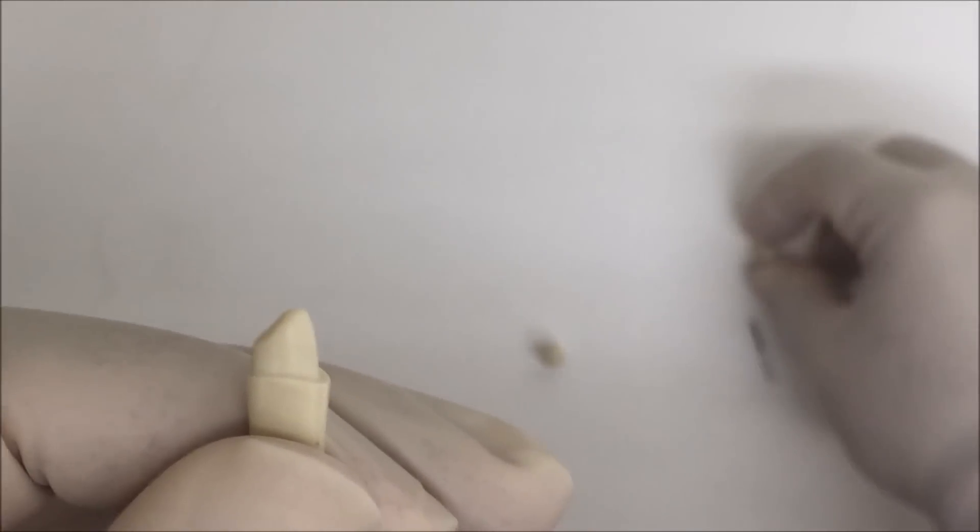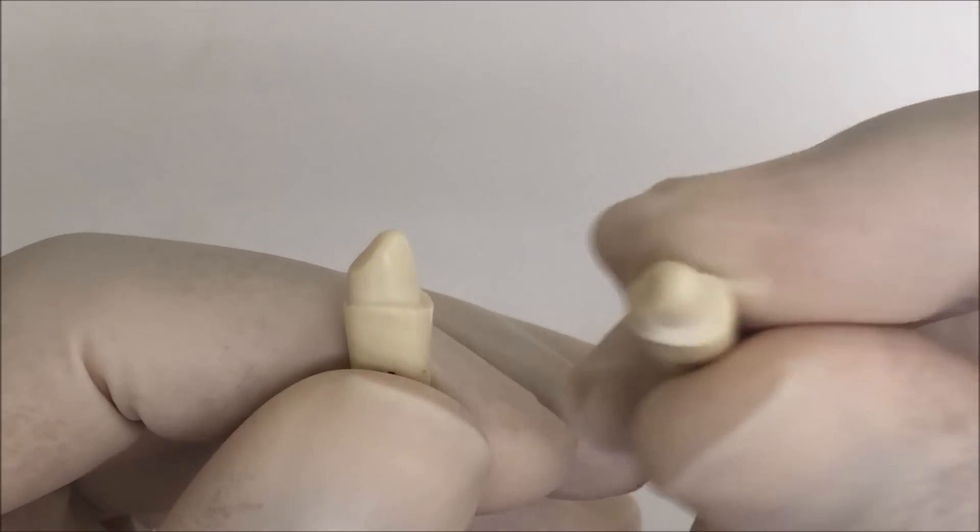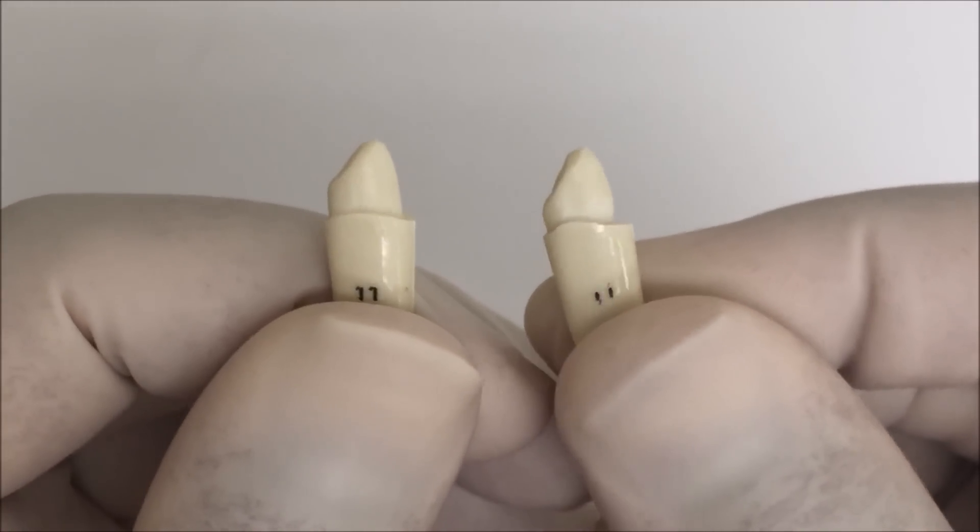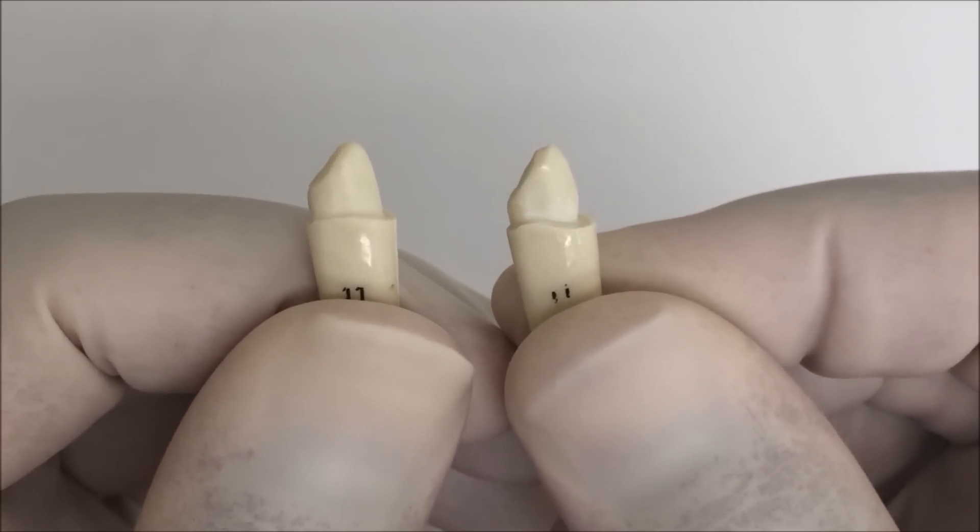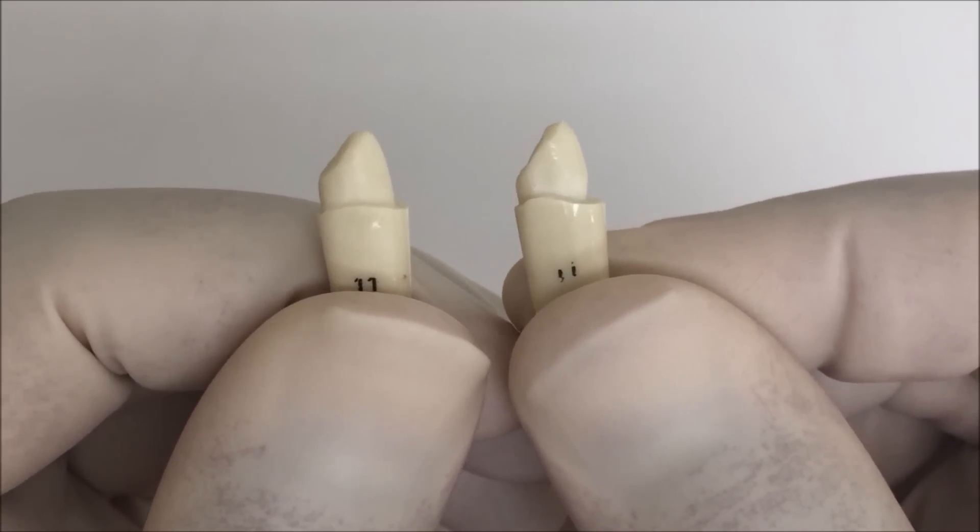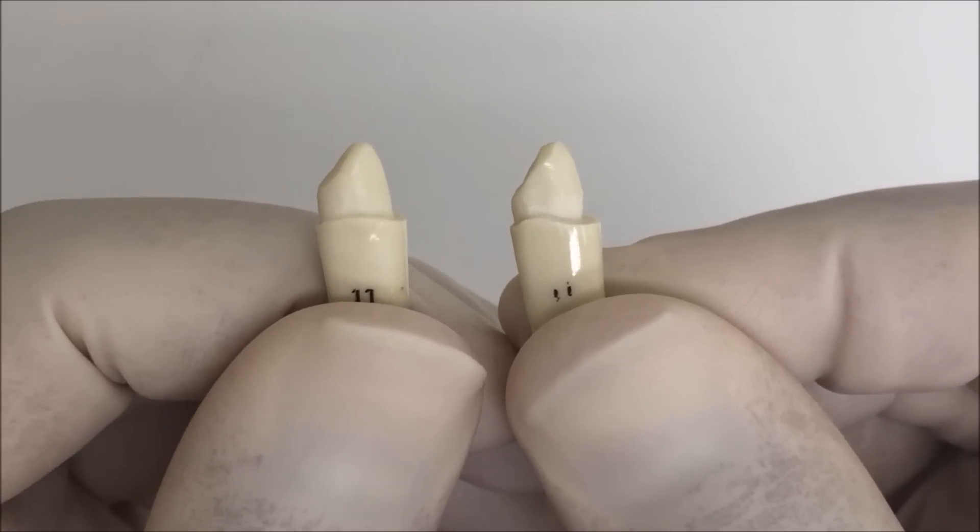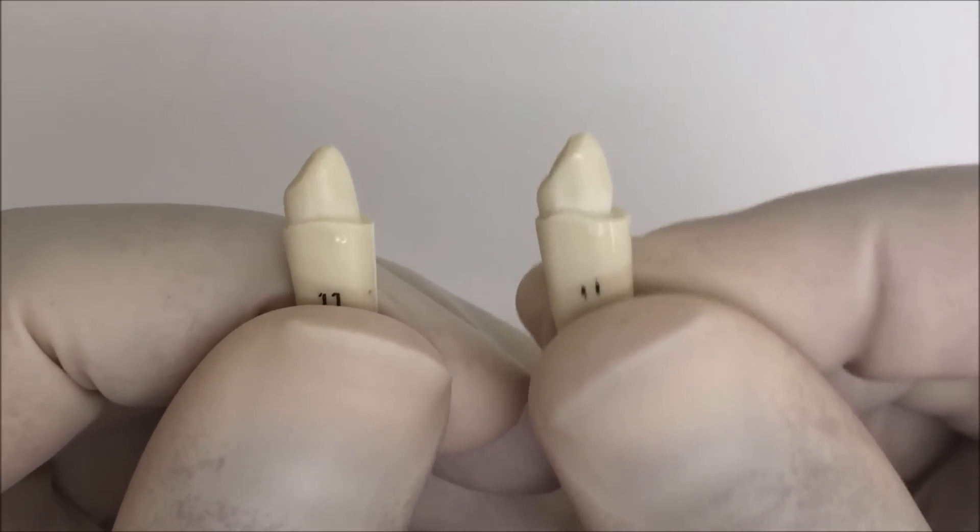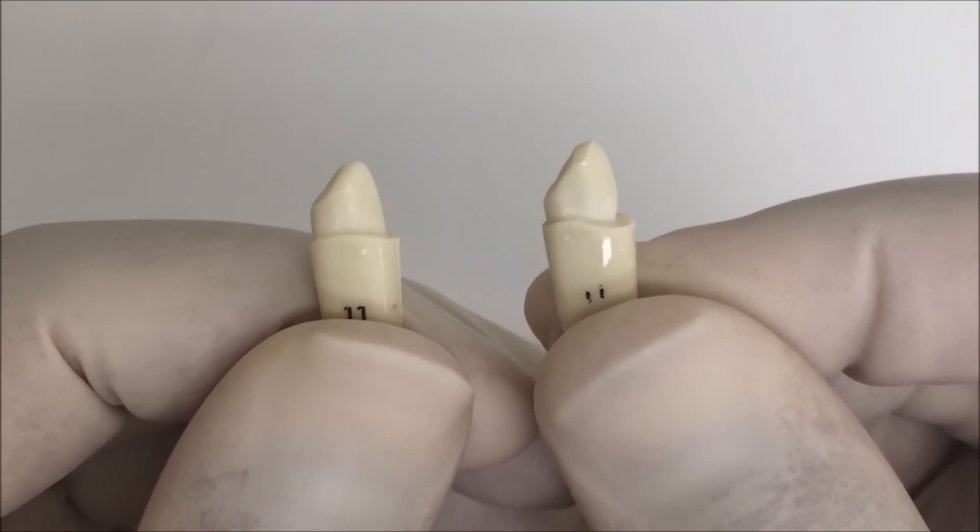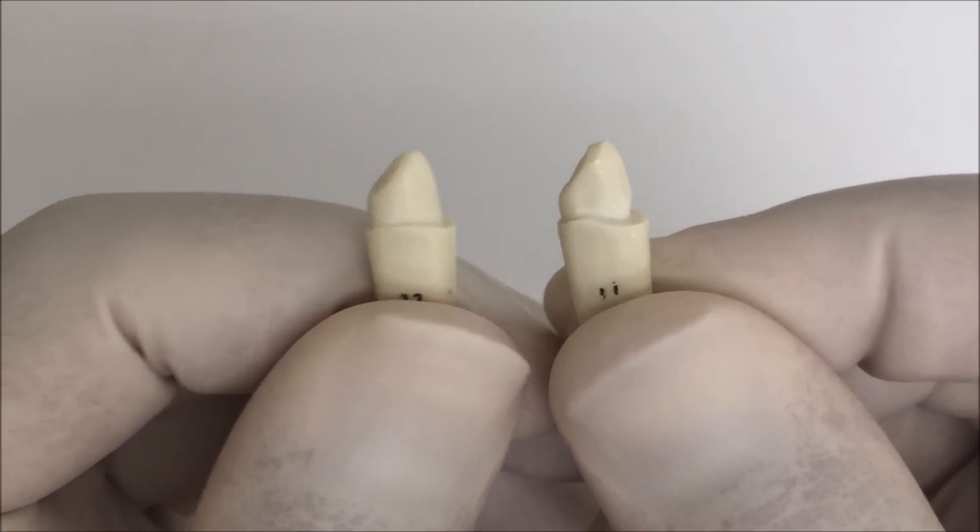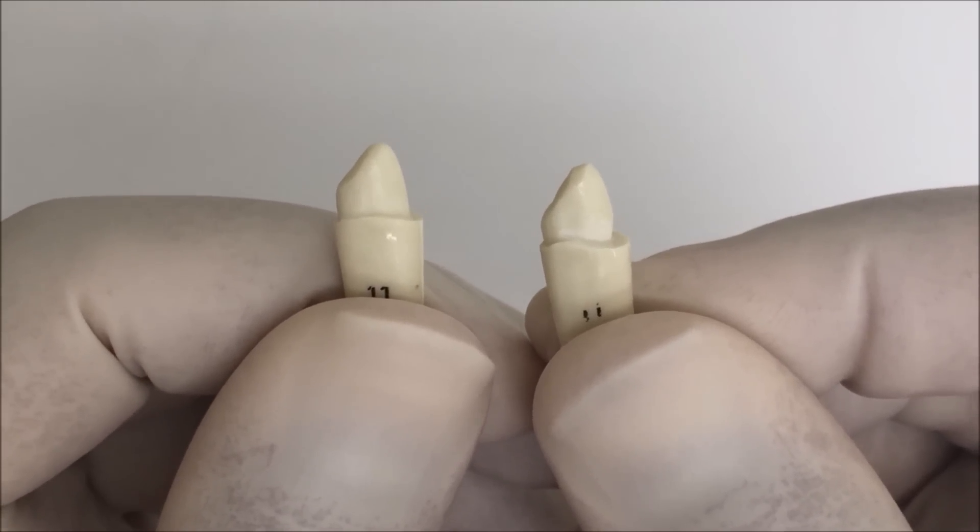The undercut is checked by viewing the tooth proximally from proximal view. You can see here the difference: the one on the right hand has undercut labially, and the one on the left doesn't have undercut and has good taper. So this is the second method.